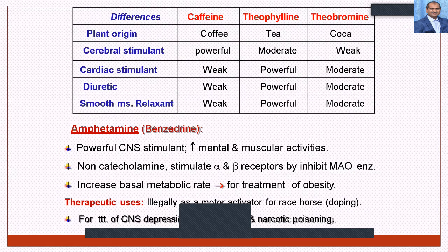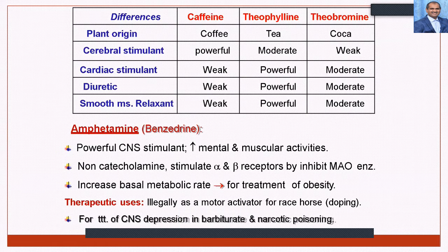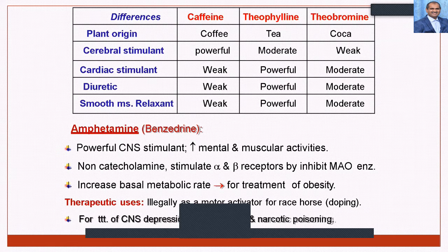Amphetamine is also known as benzedrine — a powerful CNS stimulant increasing mental and muscular activities. It is a non-catecholamine that stimulates alpha and beta receptors, inhibits monoamine oxidase enzyme, and increases basal metabolic rate. Uses include treatment of obesity. It is also illegally used as a doping agent in racing and is a banned drug in many sports.